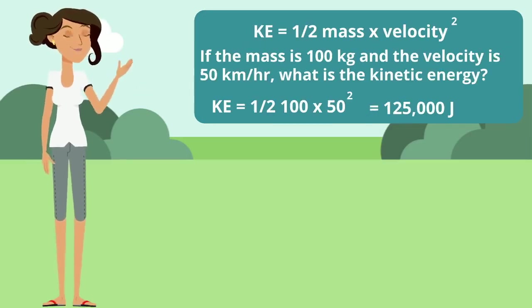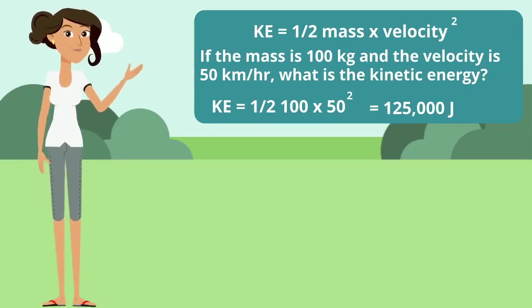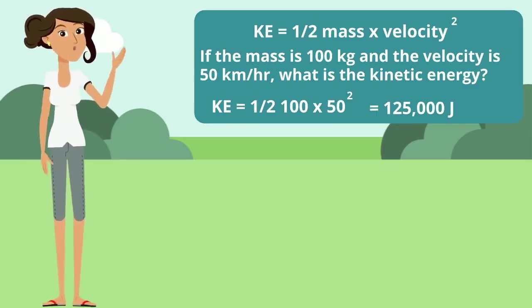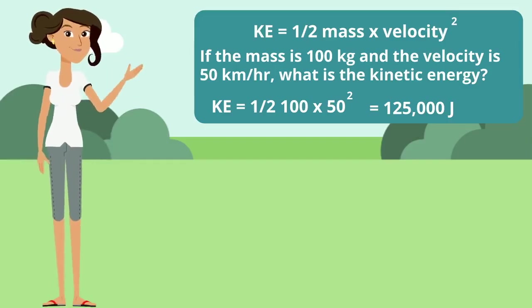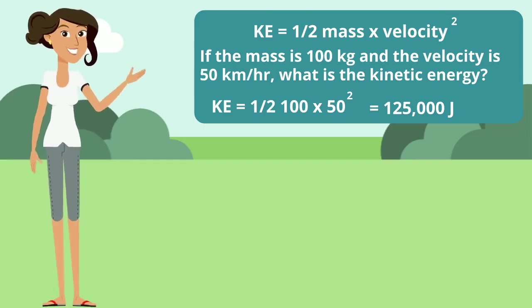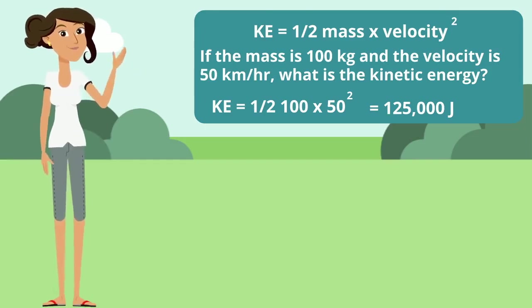So if the mass is 100 kilograms and the velocity is 50 kilometers per hour, what is the kinetic energy? You need to plug it in, so it's a half of 100 kilograms times 50 squared gives you 125,000 joules.